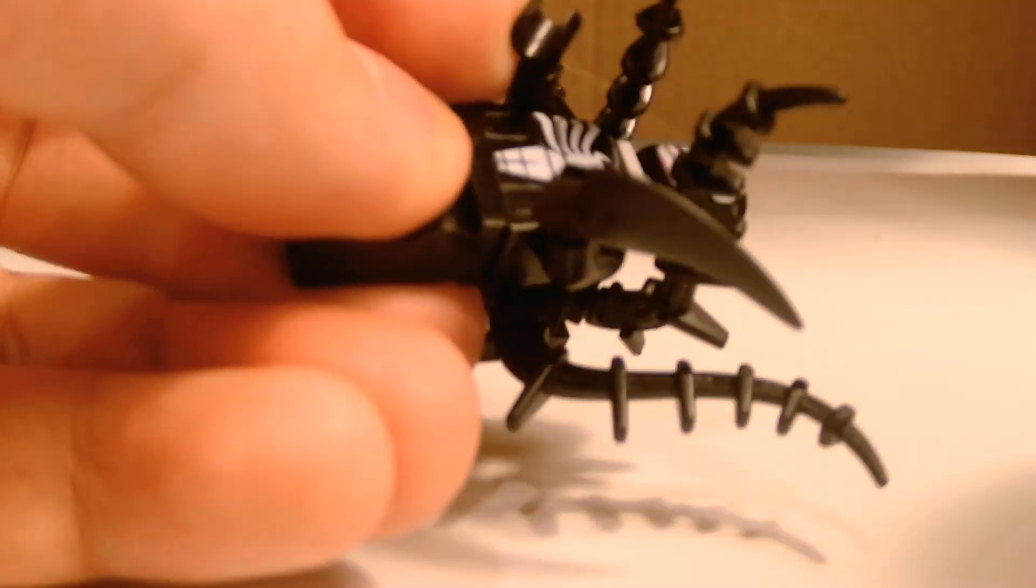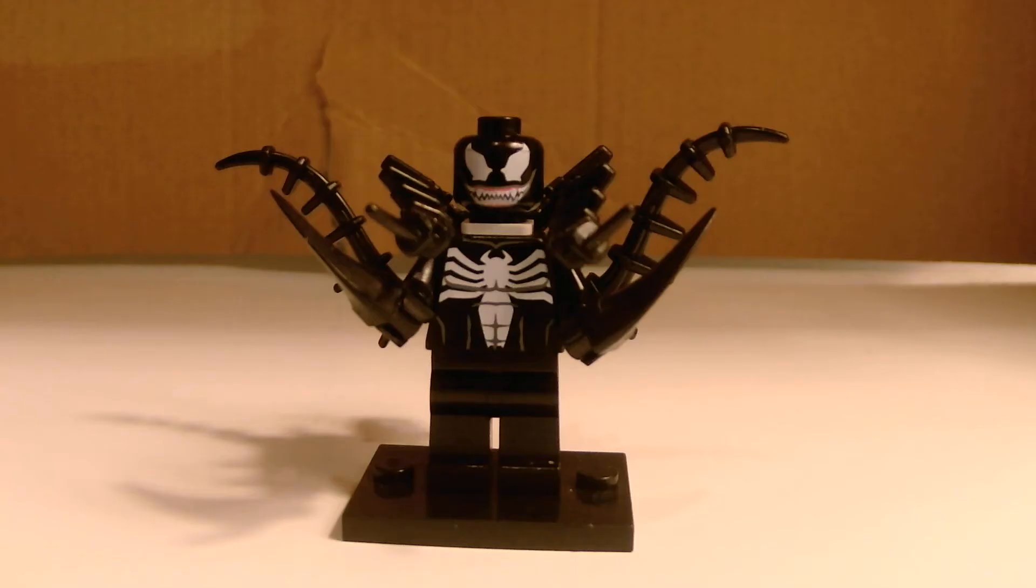Take the claws, and then you want to attach them to the minifigure. I prefer to do it with the claw facing backwards. You can do it with them facing forwards, whichever one you think looks better. And boom! Improved Venom minifigure.